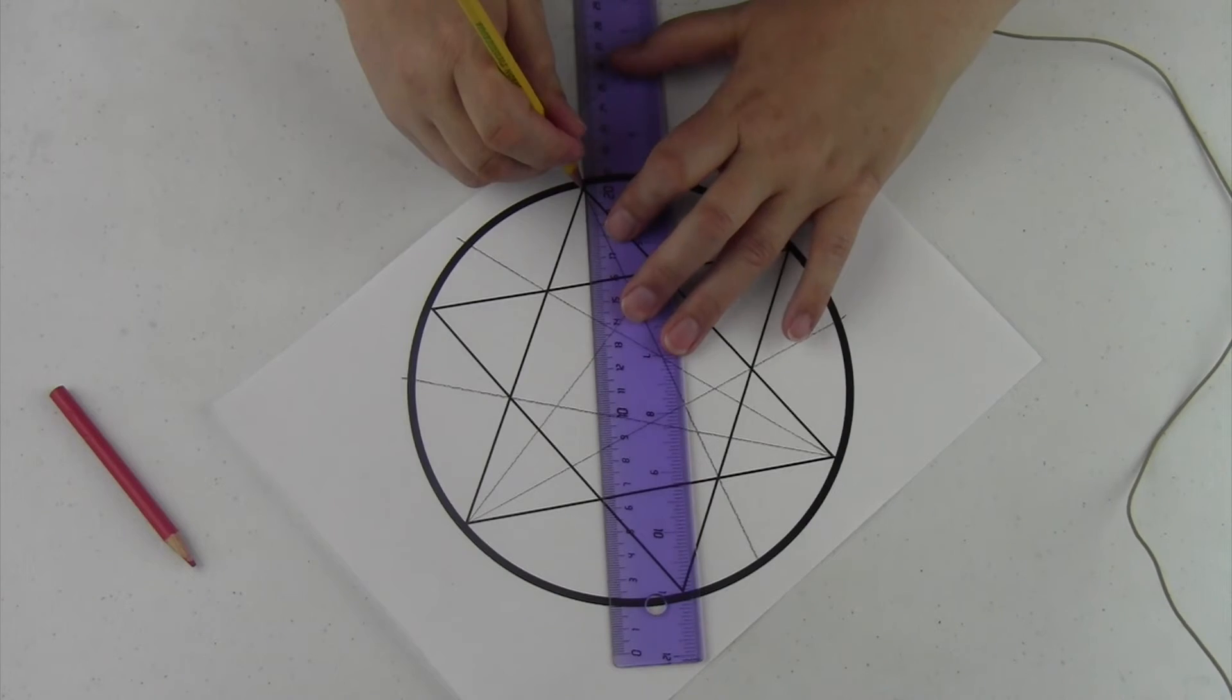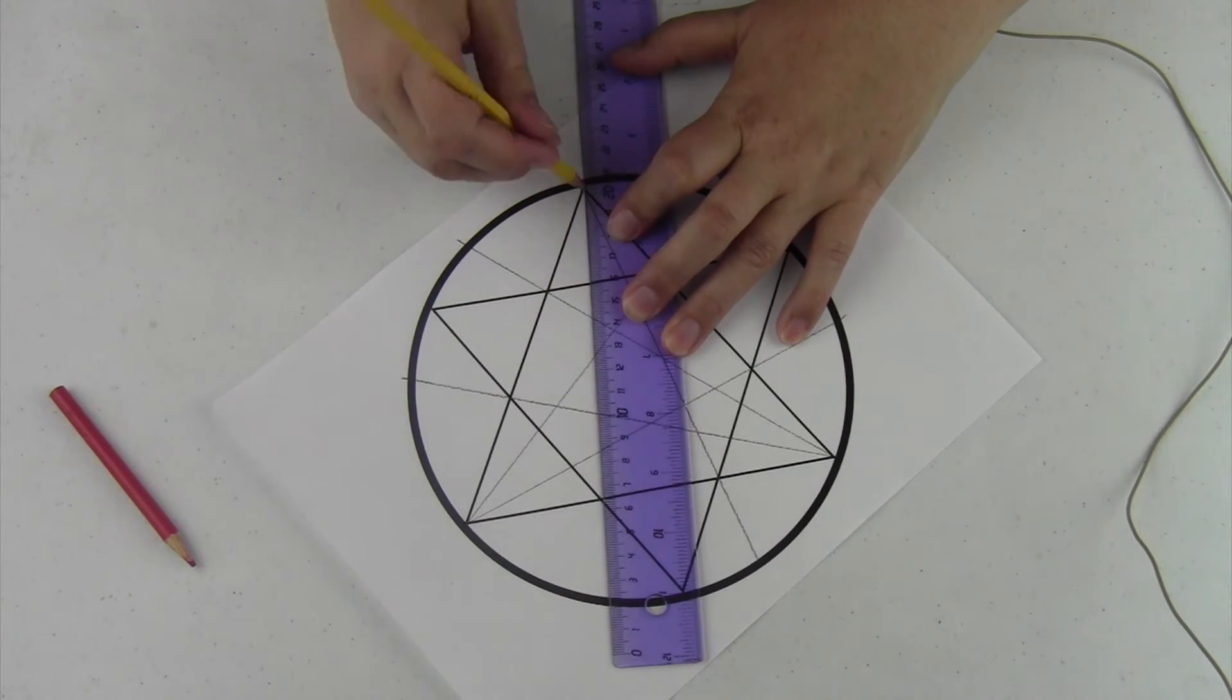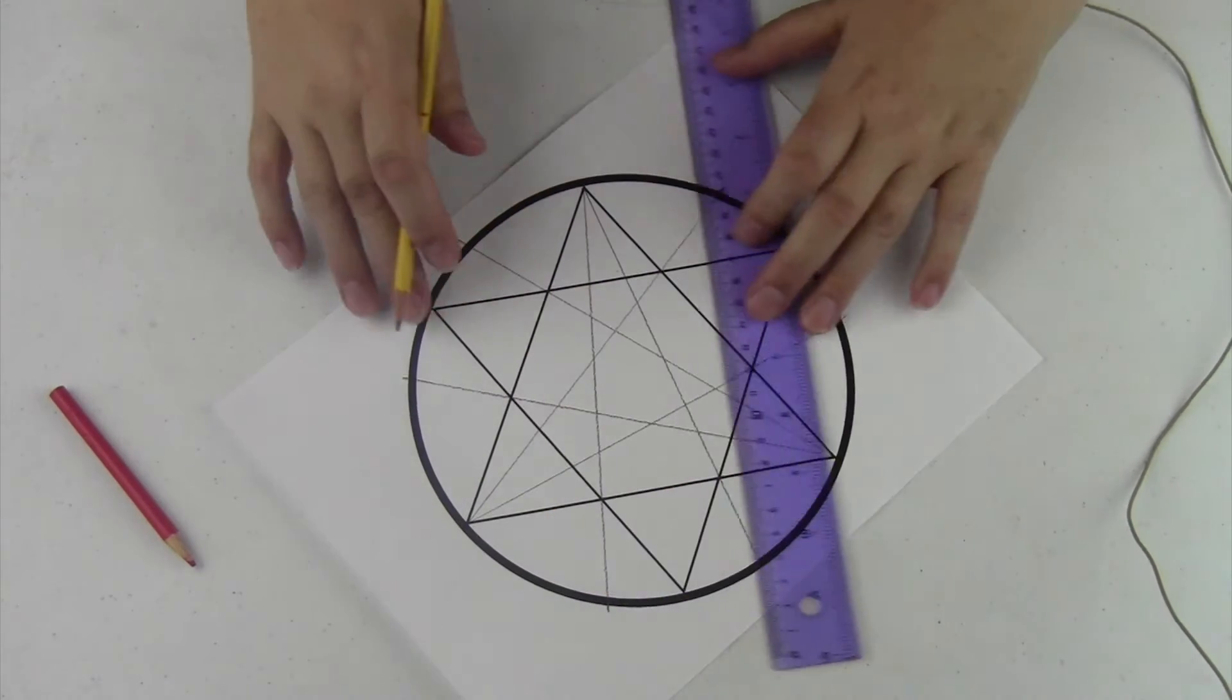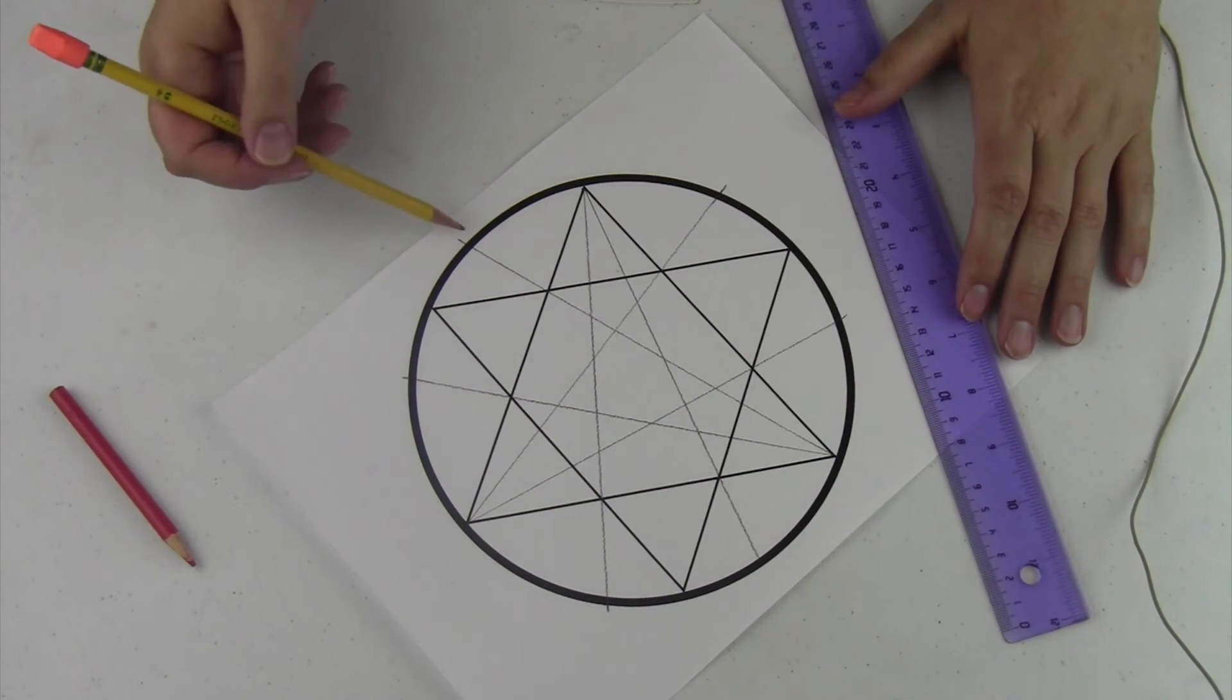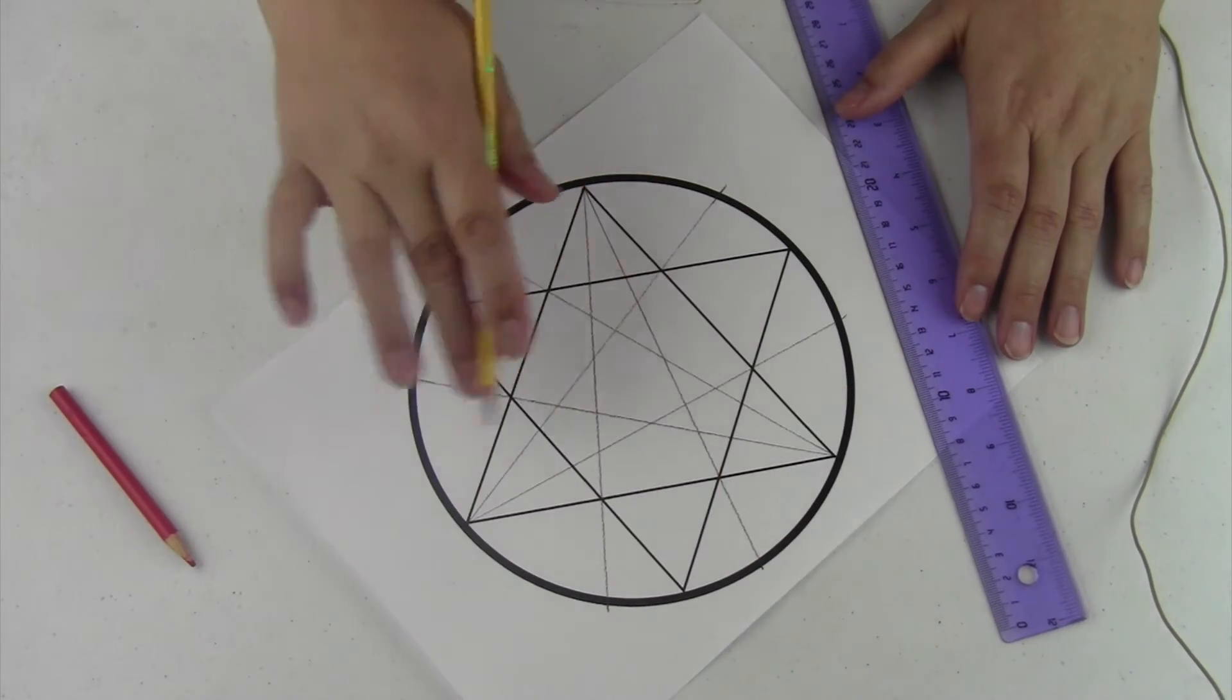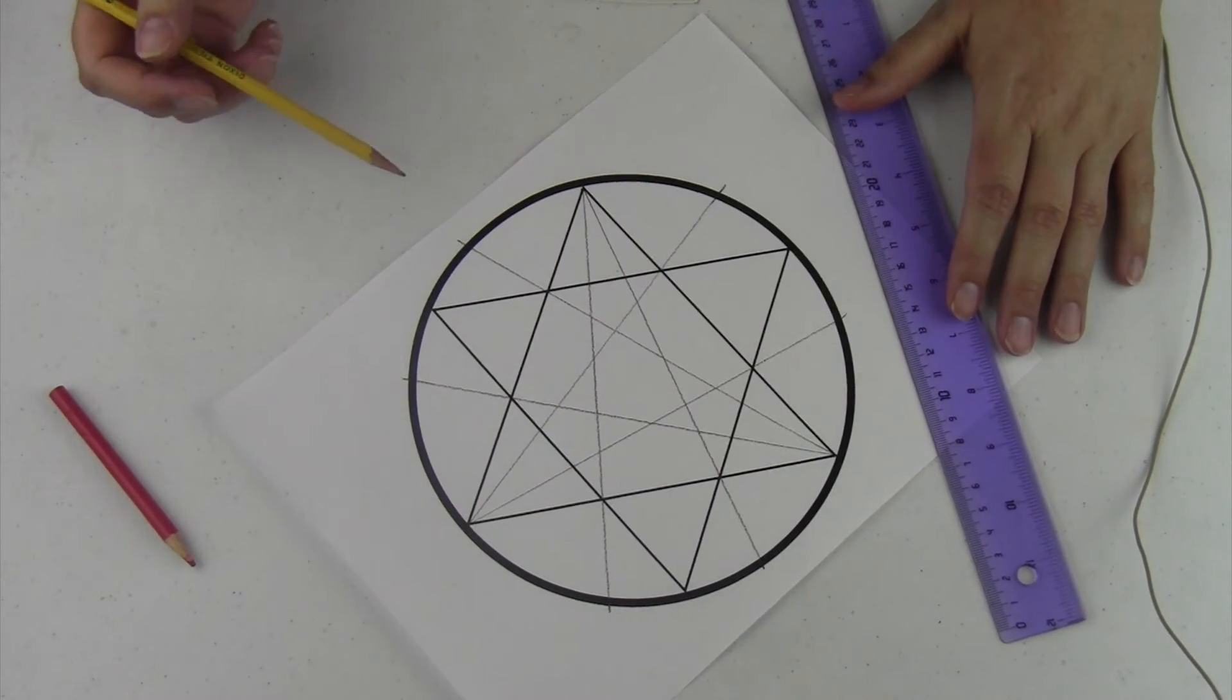Going through that bottom section right here, that cross section right there, that new mark made. Now we have these two extra points on the outsides of our circle. And that's how you create a nonagon.